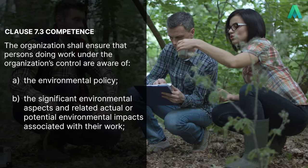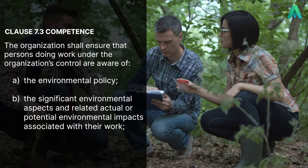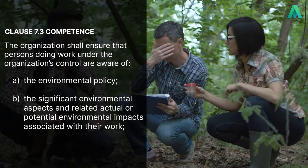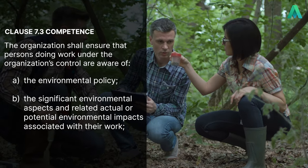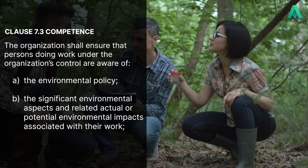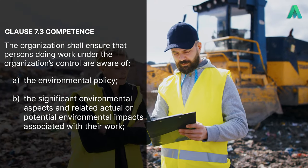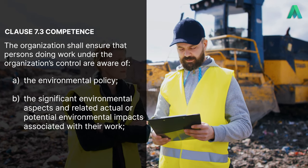Let's take a look at what clause 7.3 wants us to do. First off, the clause states that the organization shall ensure that persons doing work under the organization's control are aware of: A, the environmental policy; B, the significant environmental aspects and related actual or potential environmental impacts associated with their work.